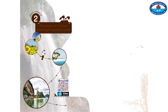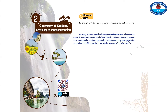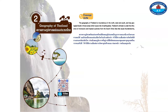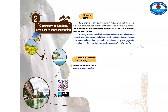Module 2: Geography of Thailand. The geography of Thailand is mountainous in the north, west, and south, and has geological faults in those areas which cause risk of earthquakes. Thailand's climate is under the influence of monsoons and tropical cyclones from the South China Sea that cause thunderstorms, heavy rainstorms, and floods.